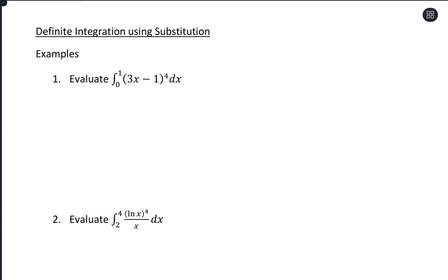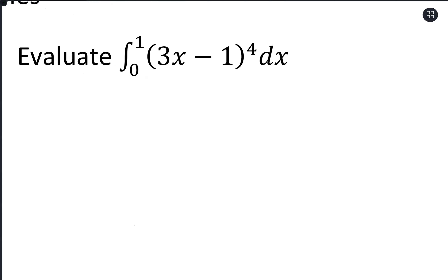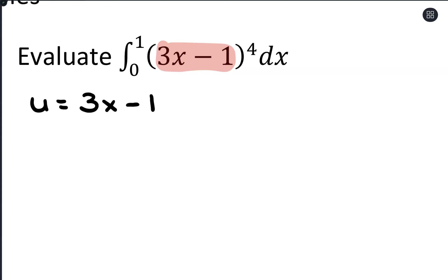With this one, what I'm going to recognize is that this looks like a composite function. We have an inside function of 3x minus 1 and an outside function of this exponent of 4. So what I'm going to do is make a substitution for that 3x minus 1 — I'm just going to call that u. So u equals 3x minus 1. Taking the derivative, du equals 3 dx.